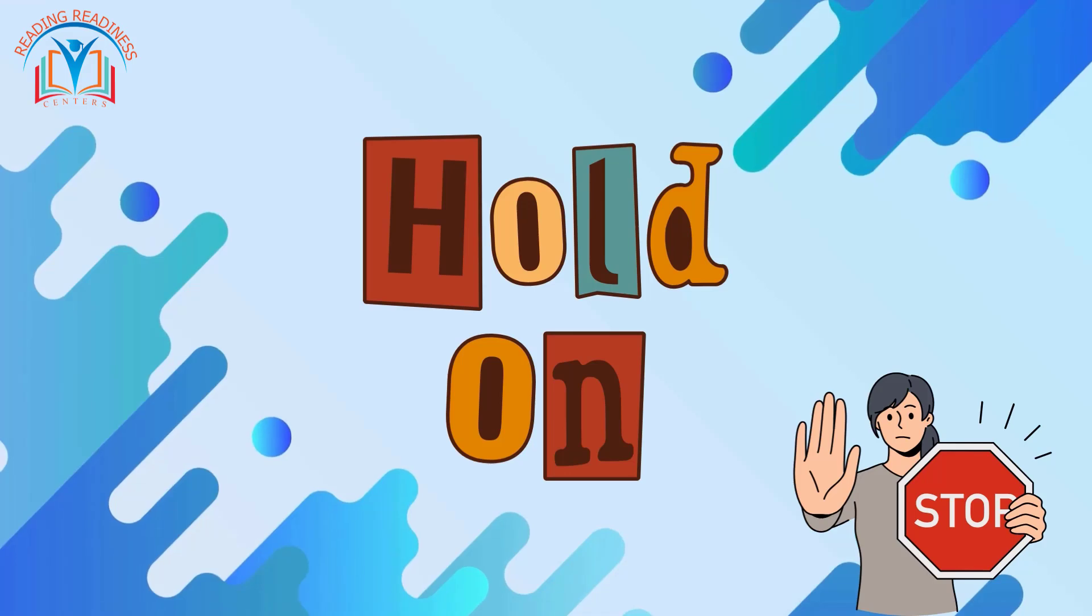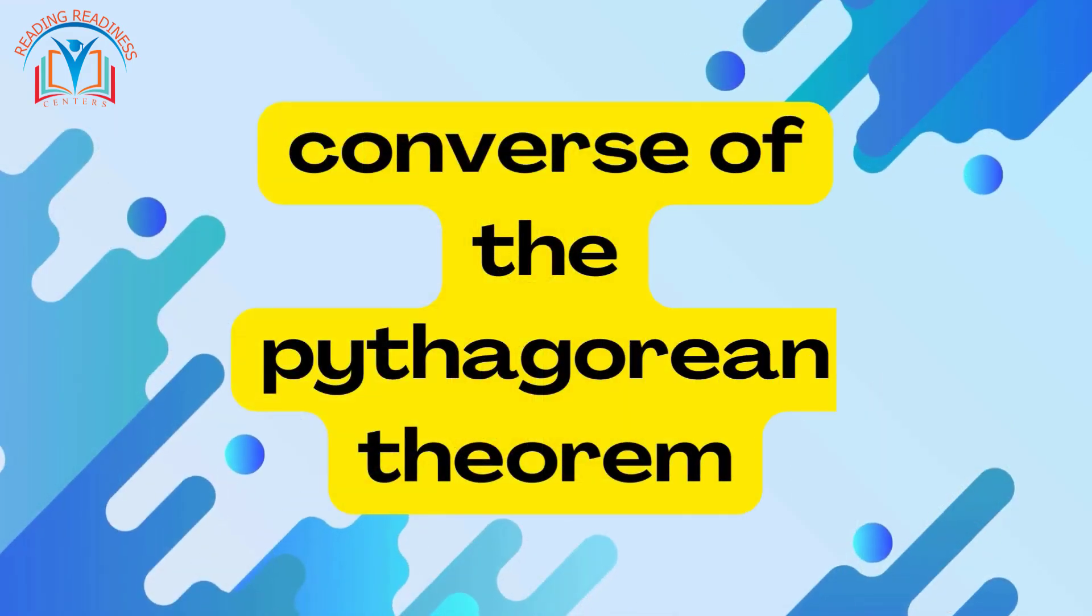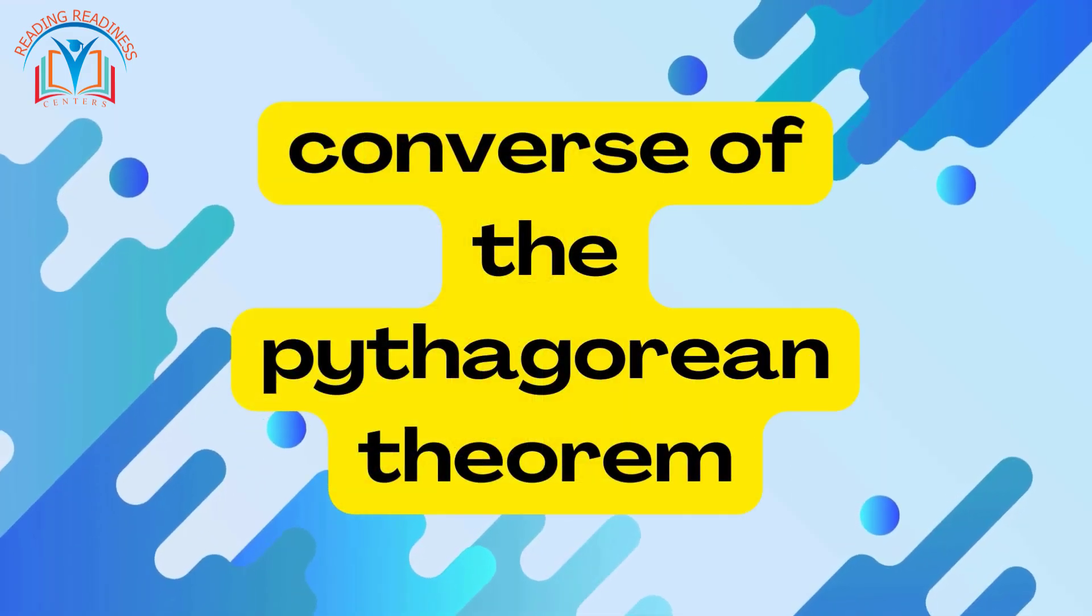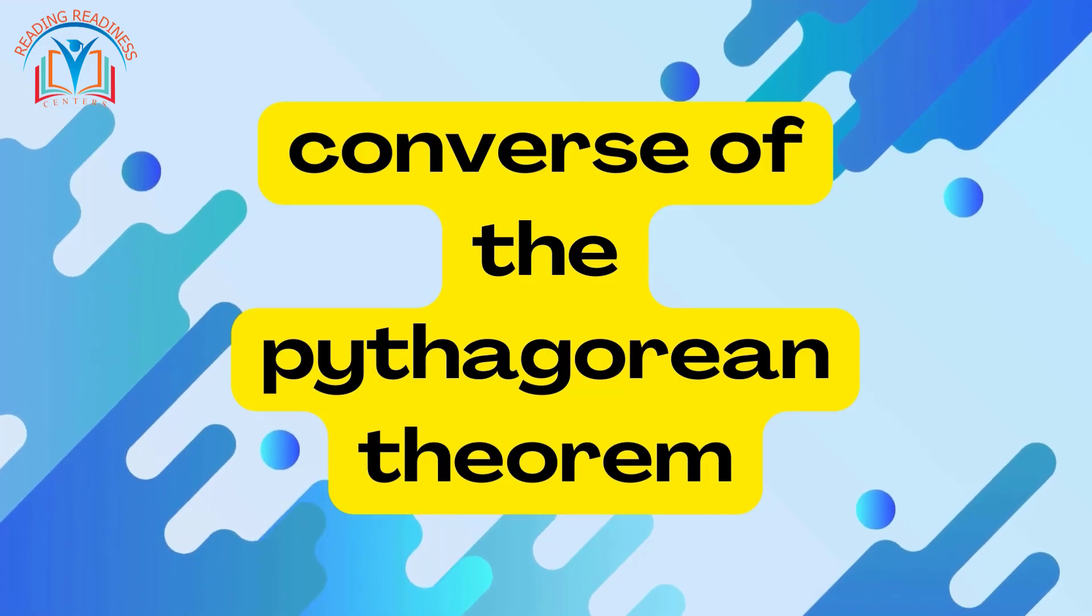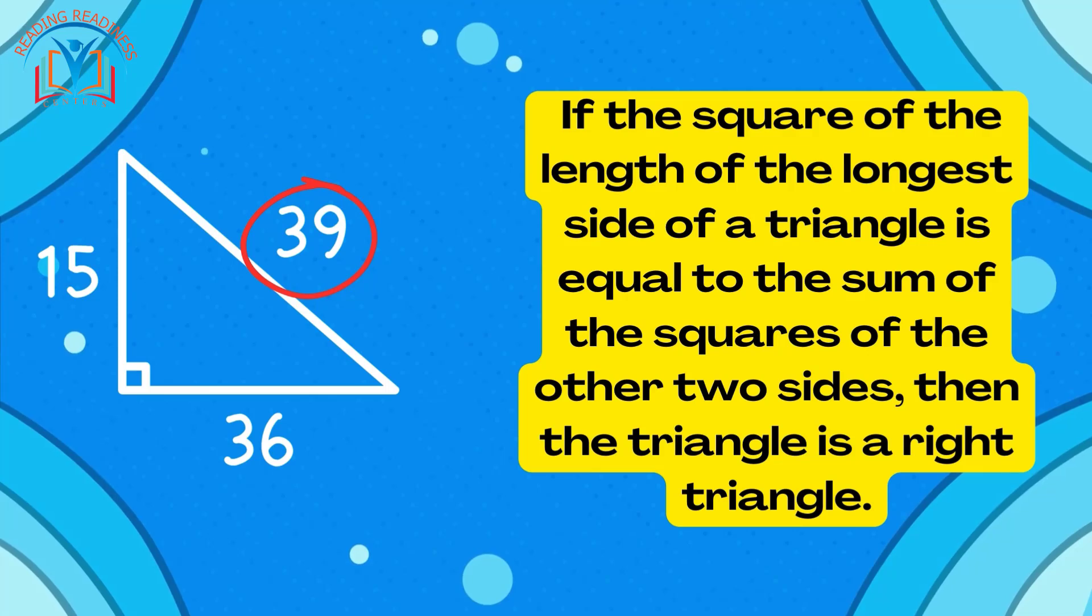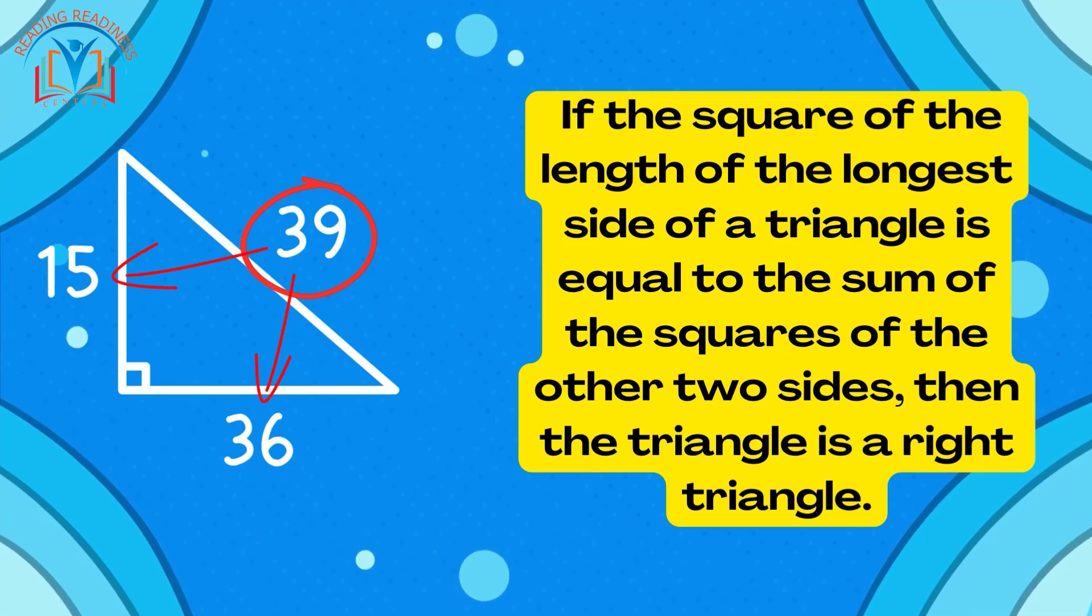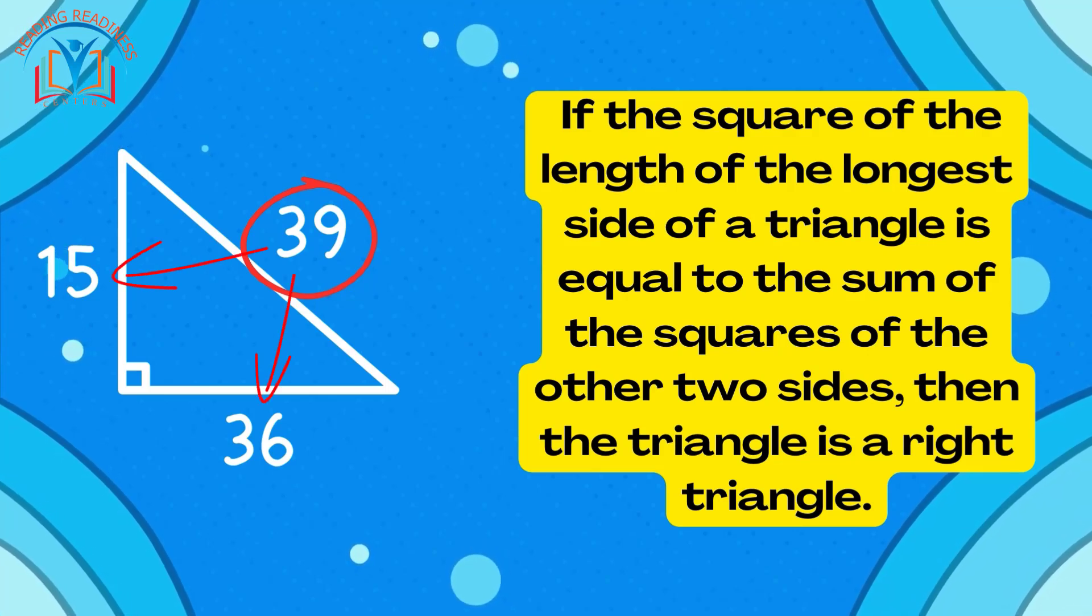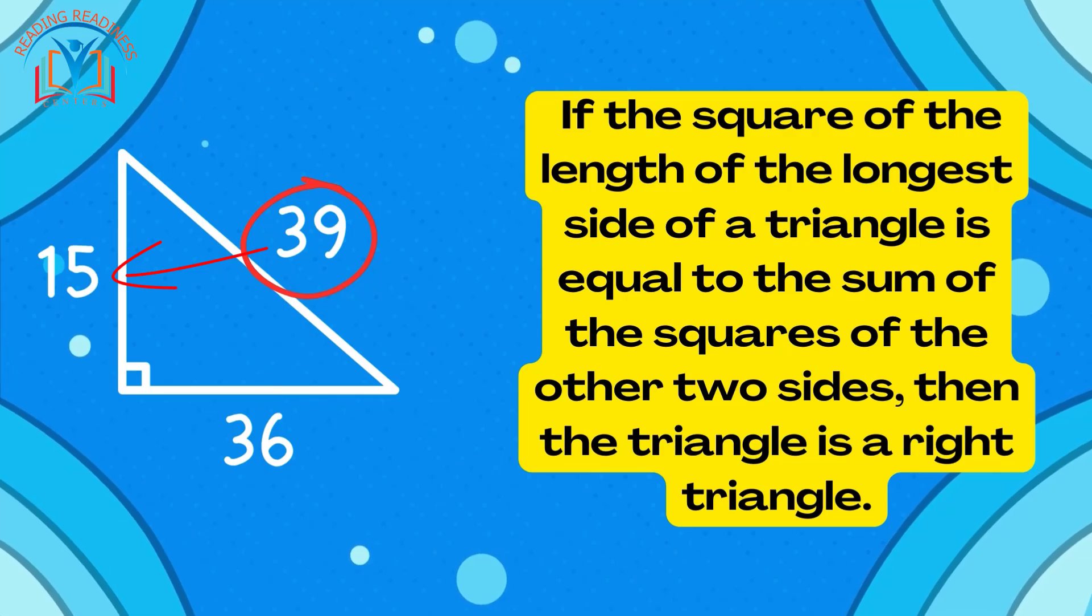But hold on, dear viewers. There's another fascinating aspect to Pythagoras Theorem known as its converse. This facet proclaims if the square of the length of the longest side of a triangle is equal to the sum of the squares of the other two sides, then the triangle is a right triangle.